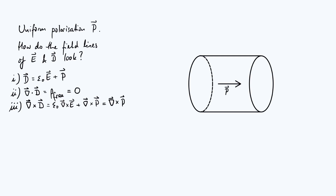What do these equations tell us about the shape of the field lines? The divergence being zero means there are no sources or sinks of D in this system, and the only way that can happen — unless D is zero everywhere — is for the field lines to form closed loops, so they don't start or end anywhere. This already sounds very reminiscent of the field lines produced by a solenoid or a bar magnet.